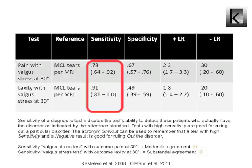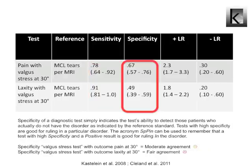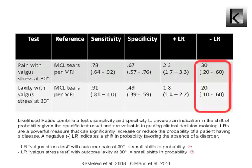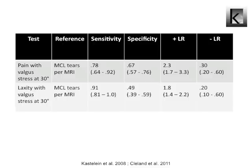When focusing on the value of the valgus stress test, we can see that the sensitivity — the test's ability to detect those patients who actually have the disorder — is better for the outcome of laxity than for pain. The specificity — the test's ability to detect those patients who actually do not have the disorder — of the valgus stress test is not very good. The outcome pain scores a bit better than the outcome laxity. Both the positive and negative likelihood ratios are poor. So we can conclude that we can't rely on the valgus stress test alone. Additional tests should be done.